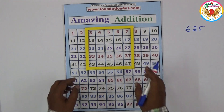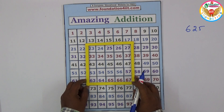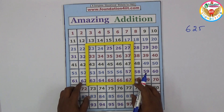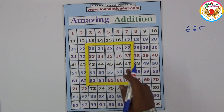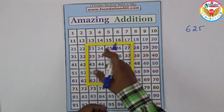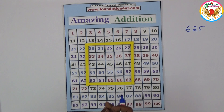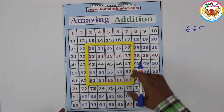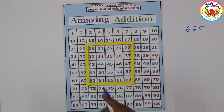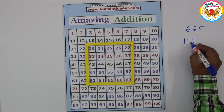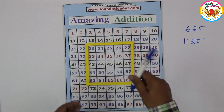For example, I placed the strip here — the sum of all the numbers inside the box is 625. You can count and verify. Now if I move it to another place, just by seeing one number in the box, in a fraction of a second you can know the total sum. The sum of this placement is 1125.